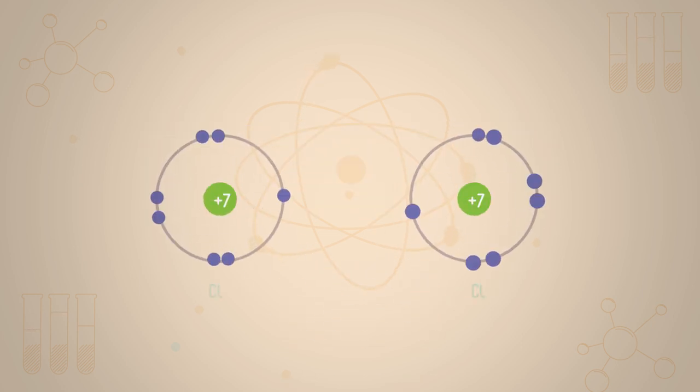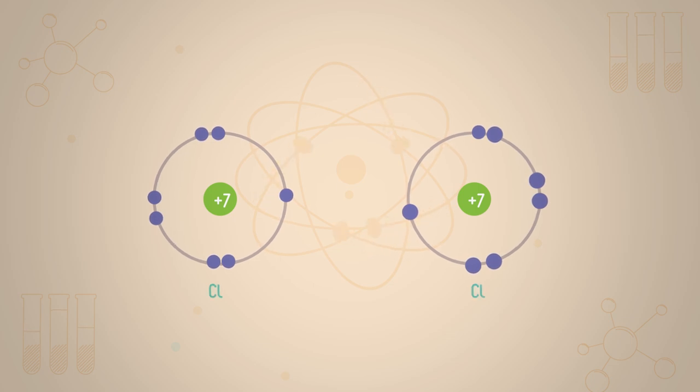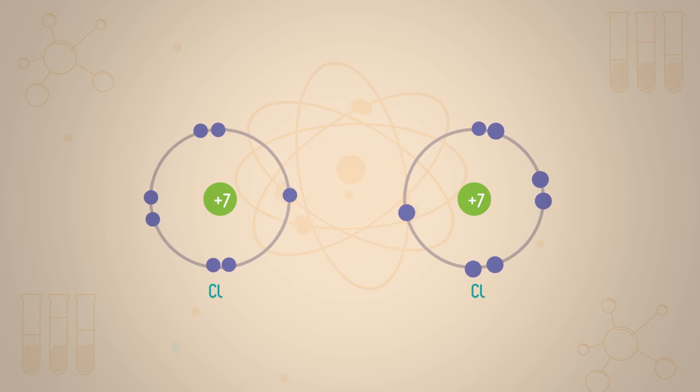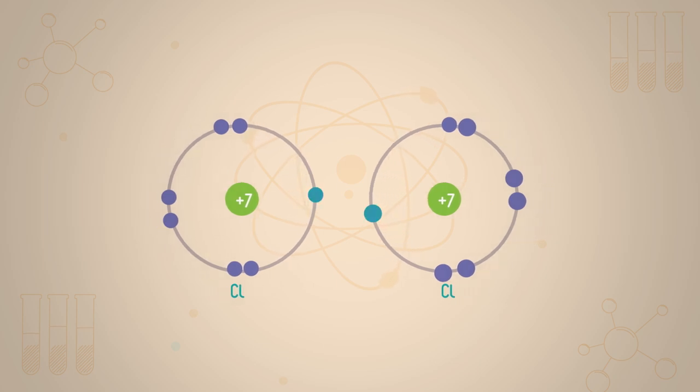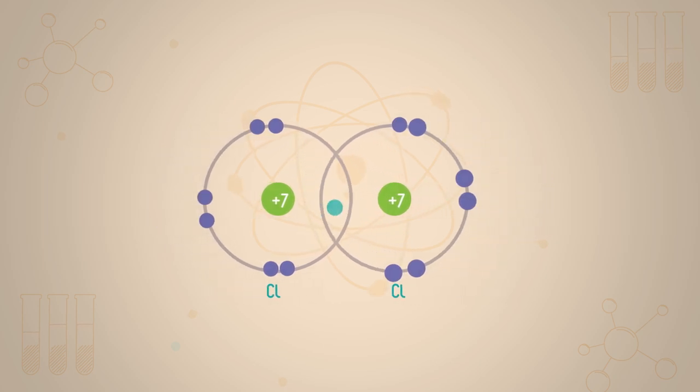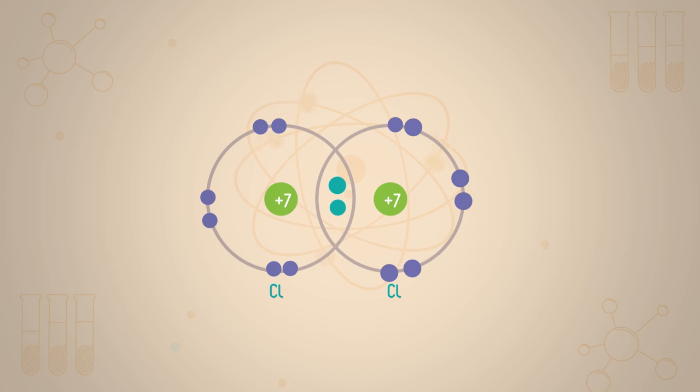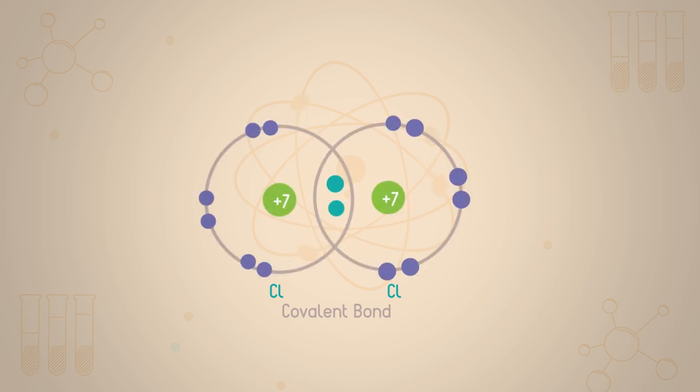Consider chlorine. Its seven outer electrons are held by an effective nuclear charge from the nucleus of plus seven, as we saw in part one of this video. As two chlorine atoms approach each other they attract and their two lone electrons pair up, filling the outer shells of both atoms. We now have a covalent bond formed by the attraction of the two electrons and the two nuclei.